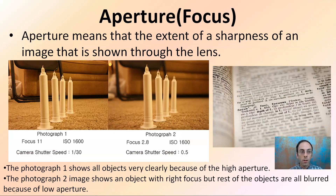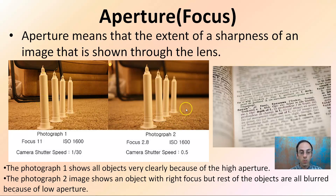Aperture refers to the extent of sharpness across an image shown through the lens. Here we can see a line of candles — in photograph one, all objects are very clearly visible with a high aperture. In photograph two, the image shows the focused object clearly, but the rest are blurred because of the low aperture. This would be important if isolating one specific object, but a higher aperture tells a better story of where objects are and what is located around them. It's important to keep aperture in mind, which may be limited based on available light.